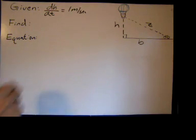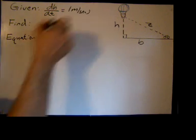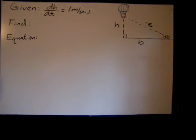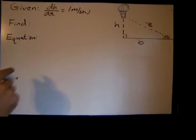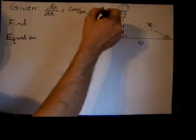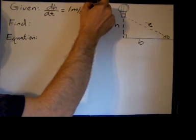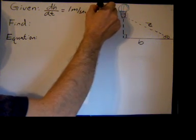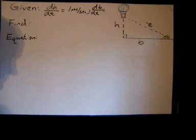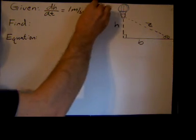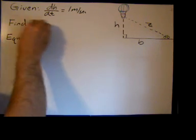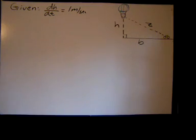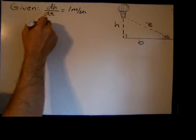And we were also given the fact that the bicycle is moving at a constant rate of 17 meters per second, so we can say dB/dt equals, I'm going to rewrite this below quickly, just running out of room. So dB/dt equals 17 meters per second.